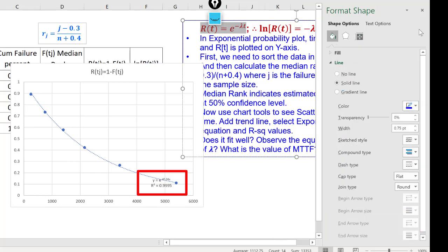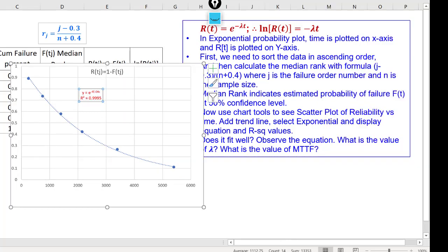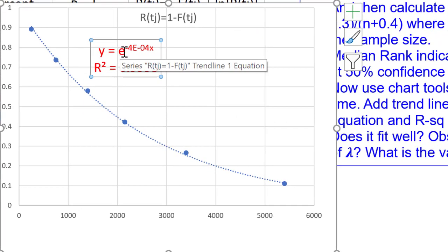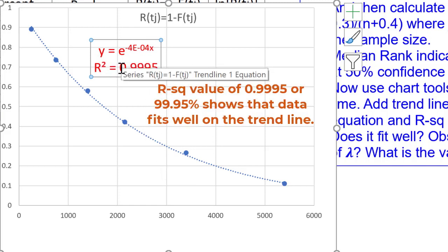So, we have to choose 1. So, we get the line. The equation is y is equal to e to the power minus 4 into 10 raised to minus 4x. And the R square value is 0.9995. R square value is good. That means 99.95% of variation in y that is reliability can be explained with time with this exponential distribution.